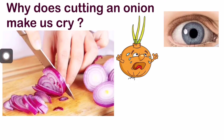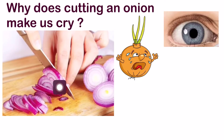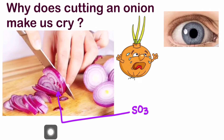The reason why our eyes weep when we peel off an onion is that the onion contains minute pockets of sulfur trioxide gas. So when we cut the onion, sulfur trioxide gas — that is SO3 — will be released from it.